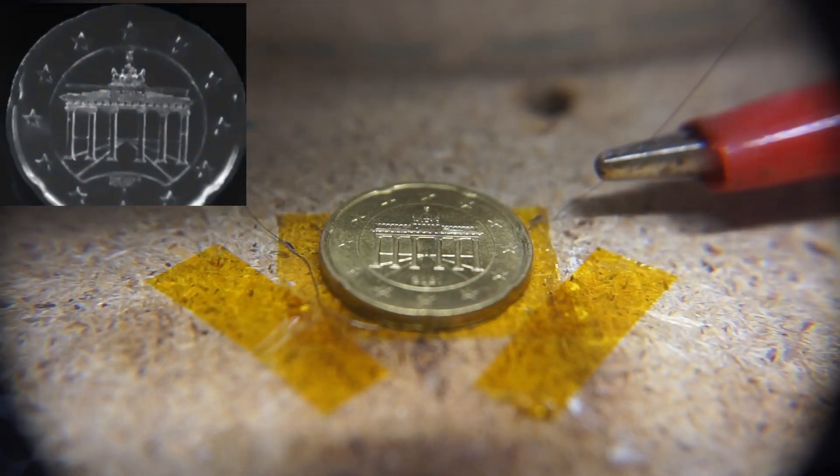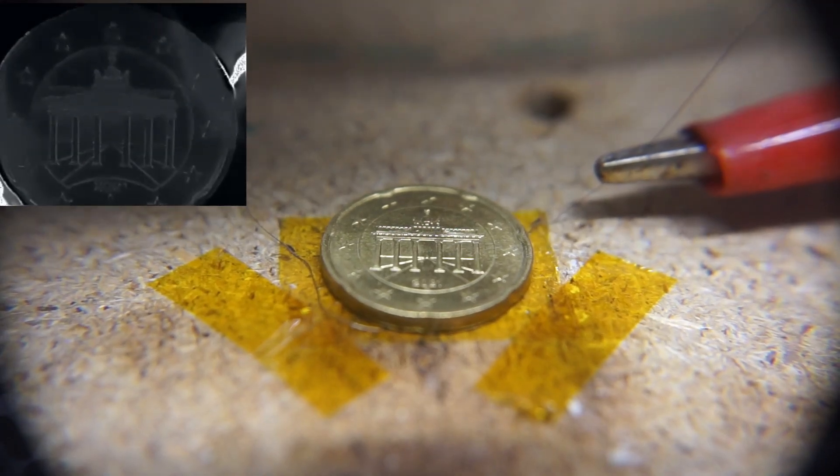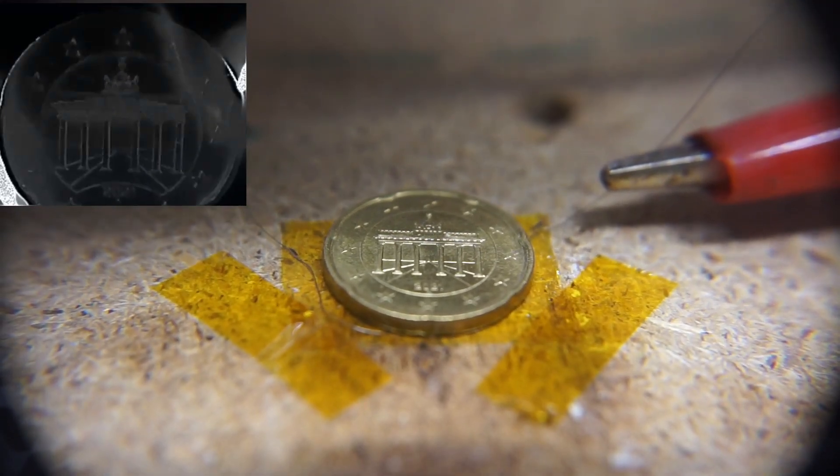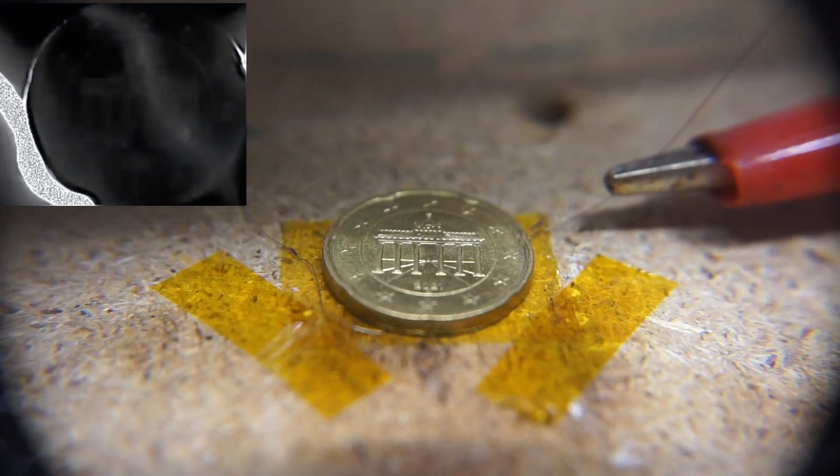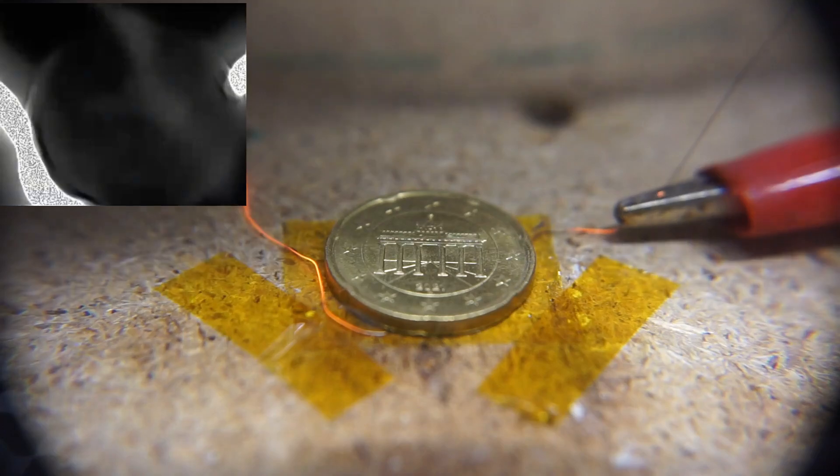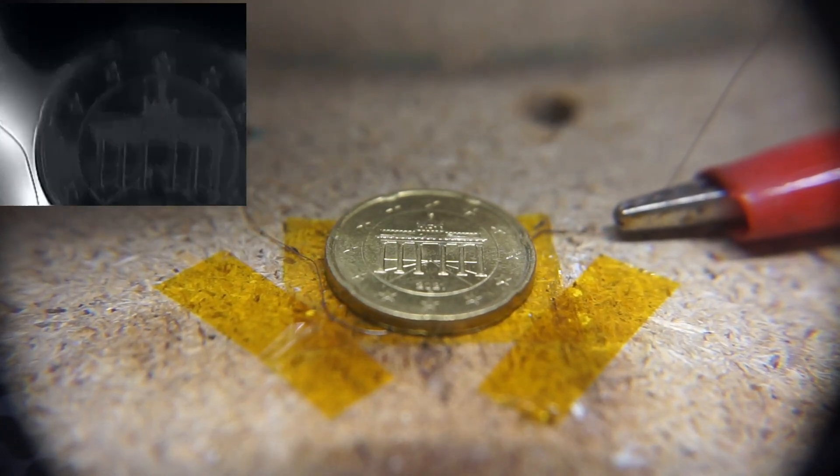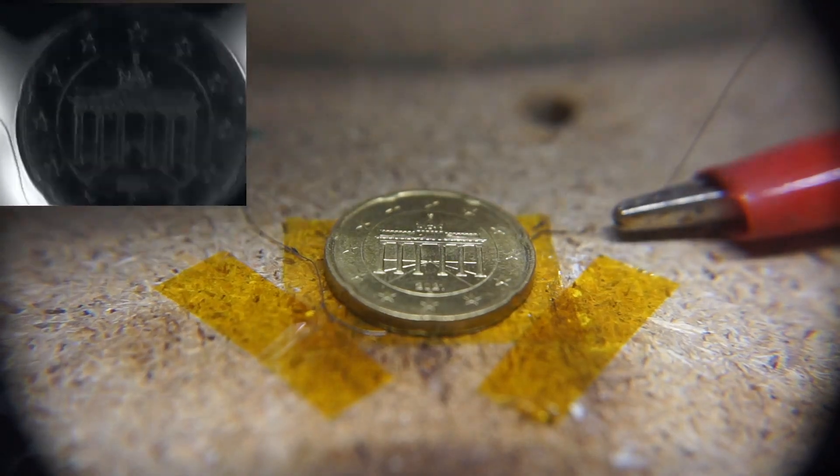So now I'm gonna turn the current up. We're now at 7 volts, 10 volts. And as you can see the heating wire below the... Oh, it's getting a little bit too hot. There was some smoke.